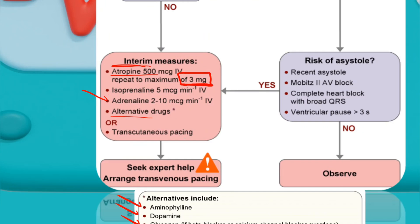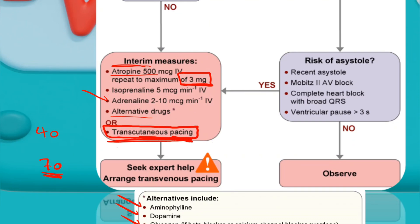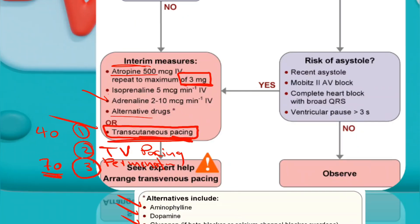If pacing is available, perform transcutaneous pacing by placing two adhesive pads on the patient's chest and increasing the voltage and heart rate — for example, raising a rate of 40 to 70 beats per minute. This is typically done by cardiologists. If transcutaneous pacing is unsuccessful or is only a temporary measure, transvenous pacing can be placed via a central line. Some patients may need permanent pacing. There are three types: transcutaneous, transvenous, and permanent.